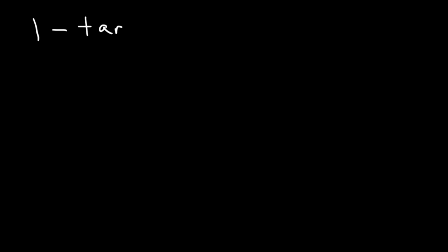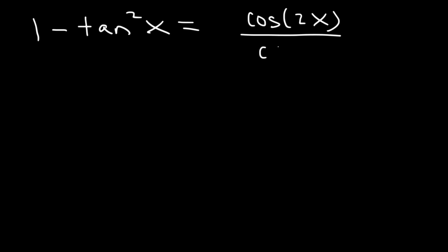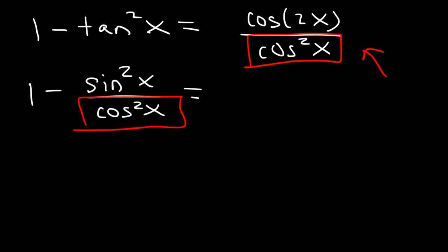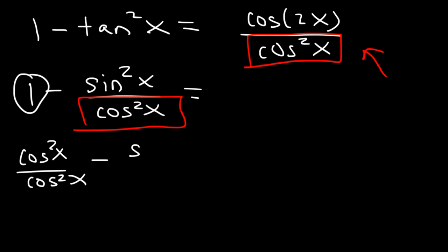Let's show that 1 - tan²x is equal to cos2x divided by cos²x. We know that tangent is sine over cosine, so tan²x is sin²x/cos²x, giving us a cos²x in the denominator which matches the right side. We can multiply 1 by cos²x/cos²x to get common denominators.